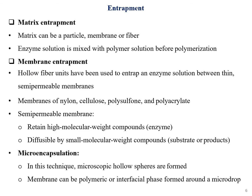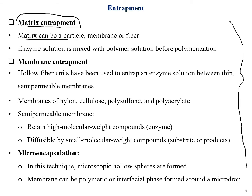For matrix entrapment, the matrix can be a particle, membrane, or fiber. The enzyme solution is mixed with a polymer solution — such as calcium alginate or polyacrylamide — before polymerization, before being poured into and attached to the pre-set matrix web.